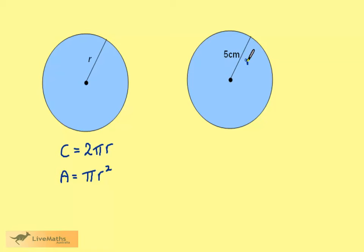Here we have a circle of radius 5 cm, so r is equal to 5. The circumference is 2 times pi times 5.